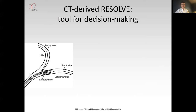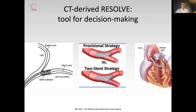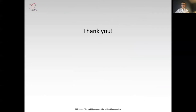Depending on the importance of the side branch, preemptive measures could include protection of the side branch with a buddy wire, application of two-stent techniques, or even deferring PCI and referring specific patients to surgery. Nonetheless, further studies are warranted to find specific CTA predictors of side branch occlusion. Thank you for your attention.